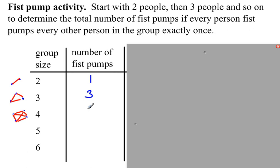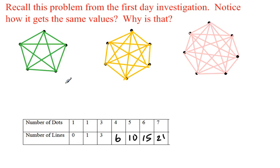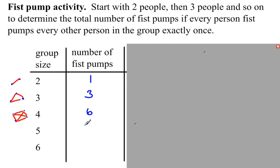This should be looking familiar to something we did before. Remember this activity where we were just drawing all the lines? Every line represents a fist pump. When we had six dots, that's six people, for a total of 15 fist pumps. If we had five people, there were 10 fist pumps. So I'm just going to transfer those numbers in.